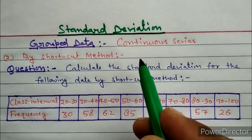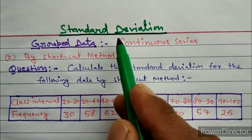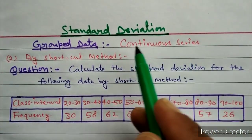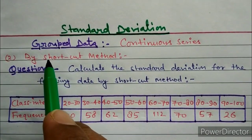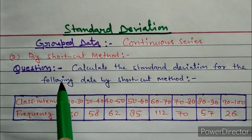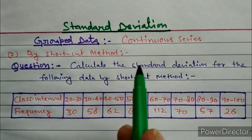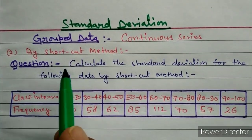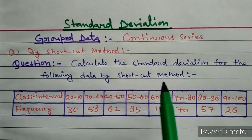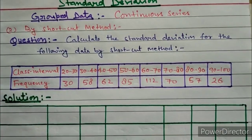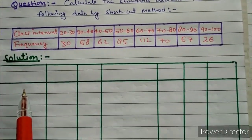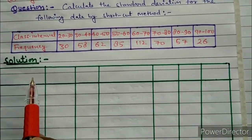Now we will see how to calculate the standard deviation for continuous series of grouped data by another method, that is the shortcut method. With the help of this question we will try to understand this. The question is: calculate the standard deviation for the following data by shortcut method. To solve this question, first of all we have to draw a table having seven columns.